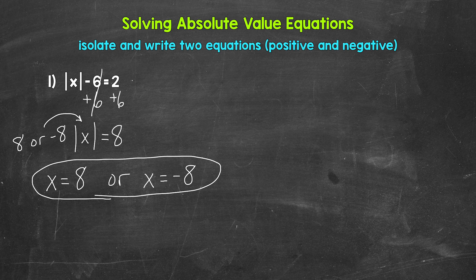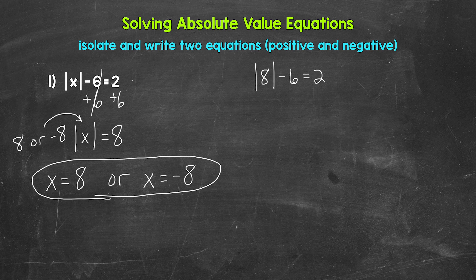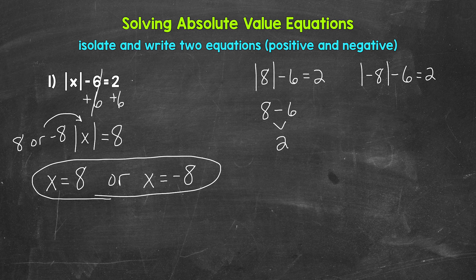In our other examples, we will have to go through additional steps to isolate the variable. Once we have our solutions, we can check them by plugging them into the original equation. For x equals eight: the absolute value of eight minus six equals two — the absolute value of eight is eight, and eight minus six gives us two. Correct. For x equals negative eight: the absolute value of negative eight is eight, and eight minus six equals two. Correct. So our two solutions are eight and negative eight.